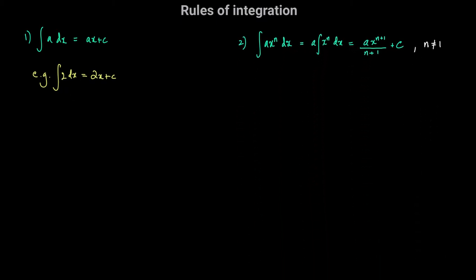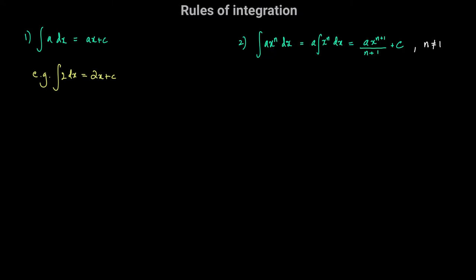Next, what if we had to integrate something of the form ax to the power of n with respect to x? Here x to the power of n is being multiplied by a constant coefficient a, and we can always factor out that constant coefficient. So the integral of ax to the power of n with respect to x equals a times the integral of x to the power of n with respect to x. This rule is referred to as the power rule. We increase the power by 1, getting x to the power of n plus 1, and we divide by the new power, n plus 1, plus our constant of integration c.